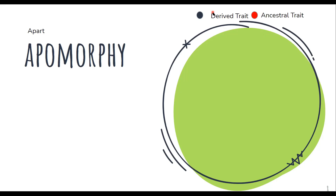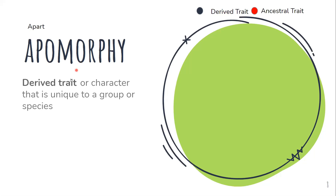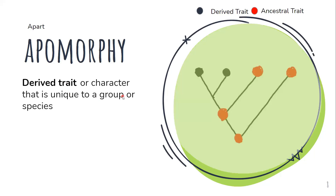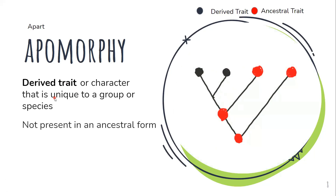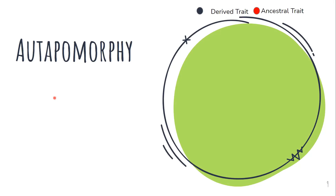The first definition is apomorphic. An apomorphic is a derived trait or character that is unique to a group or species. If you observe the tree, the black dots represent the derived trait — the ancestor doesn't have these traits, they have newly been formed. So the derived trait or character unique to a group or species is called apomorphic, and it is not present in the ancestral form.